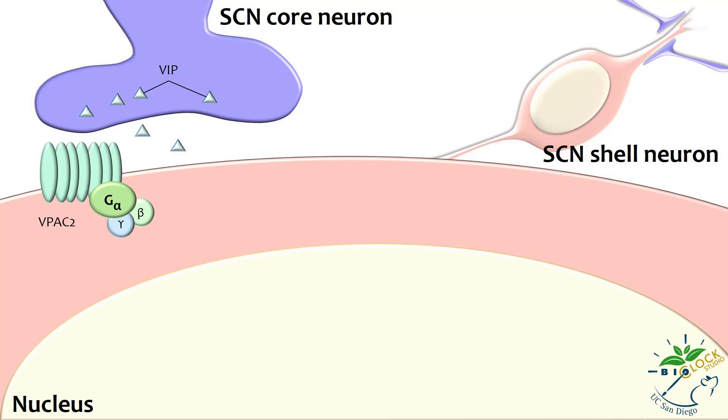VIP receptors are members of the family of G-protein coupled receptors. When VIP binds to the receptor VPAC2, it causes the activation of the GαS subunit of a G protein. Activated GαS in turn activates the enzyme adenylyl cyclase, which converts ATP into cyclic AMP.